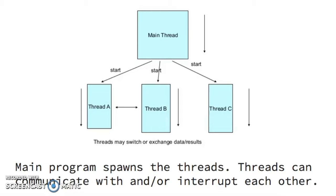In multi-threading, threads are spawned by the main program. While executing, the threads may interrupt each other — meaning stopping their execution briefly — to work on a higher priority task. Threads may also communicate important information to one another or to the main program by creating events or passing information as arguments.